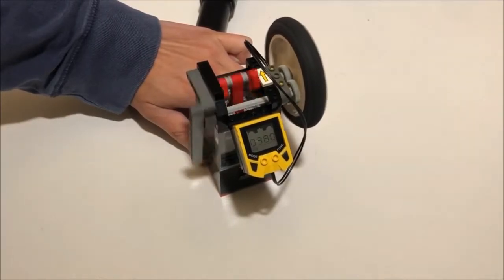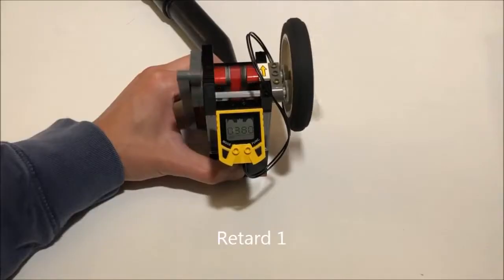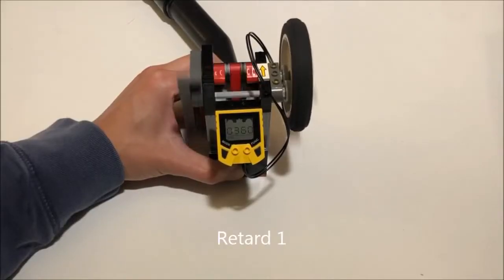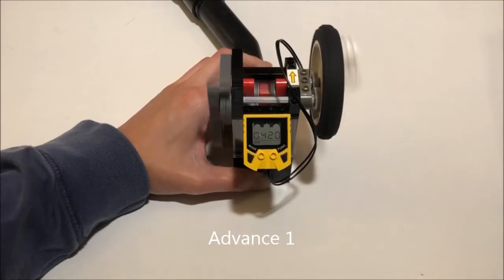Retarding the timing, opening the valve later, reduced the speed to 380 RPM. Advancing the timing, opening the valve earlier, increased the speed to 440 RPM.